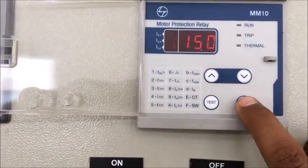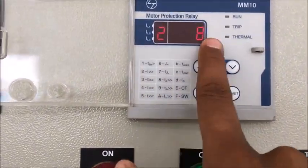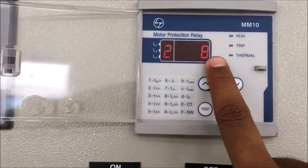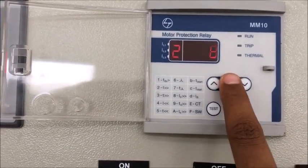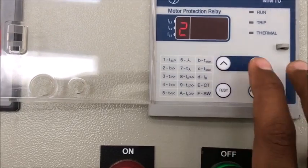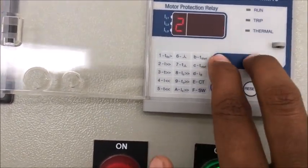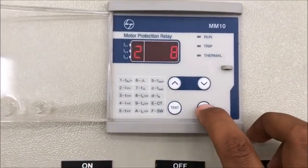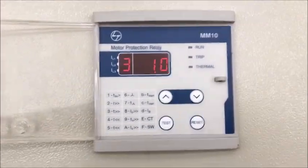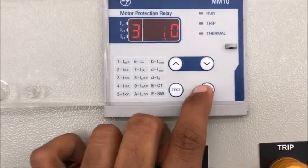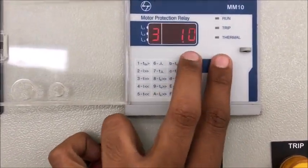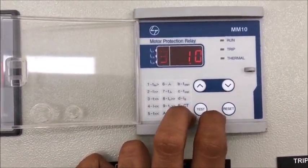Then again press the reset, then you will move forward to number two which is short circuit high set over current, already written on the relay 1-2-3-2F. Then number three is for short circuit high set over current which is T greater than greater than.